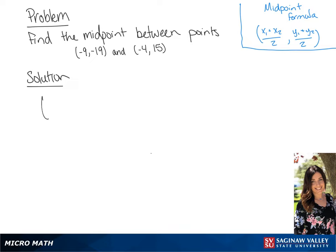We want to find our midpoint between points negative 9, negative 19, and negative 4, 15. So we're going to plug these points into our midpoint formula. This gives us negative 9 minus 4 over 2, and negative 19 plus 15 over 2.